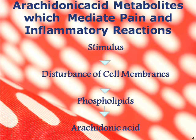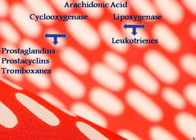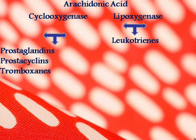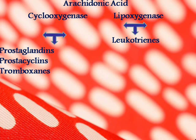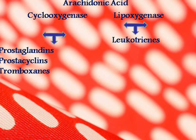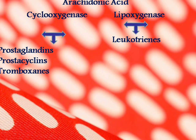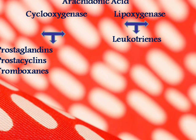Arachidonic acid metabolites mediate the pain and inflammatory reaction. Any stimulus, whether chemical or mechanical, causes disturbance of the cell membranes and releases phospholipids. By the activity of the phospholipase enzyme, it releases arachidonic acid. This arachidonic acid utilizes the cyclooxygenase pathway to form prostaglandins, which mediate pain and inflammation, thromboxins (TXA2), which lead to leukocyte modulation, vasoconstriction, platelet aggregation, and inflammation. It also releases prostacyclin (PGI2), which causes vasodilation.